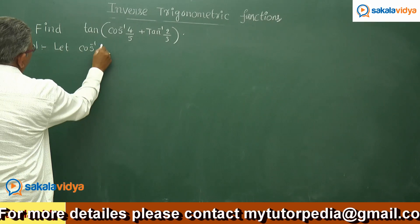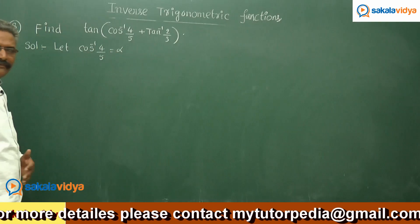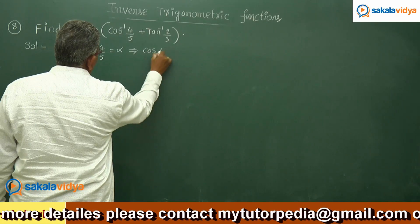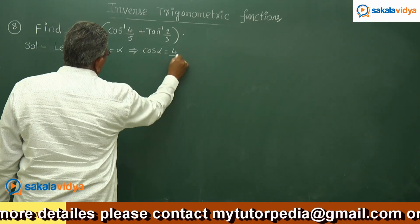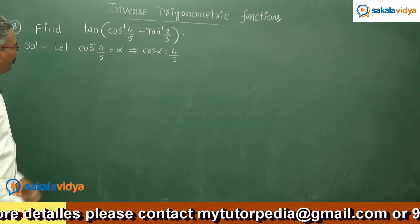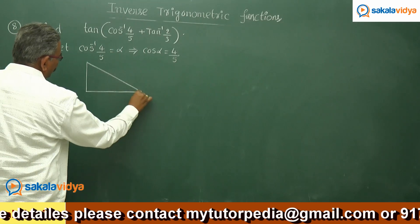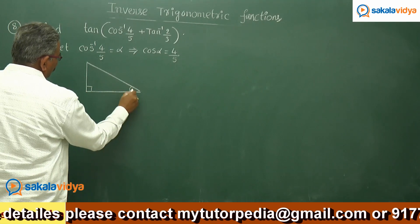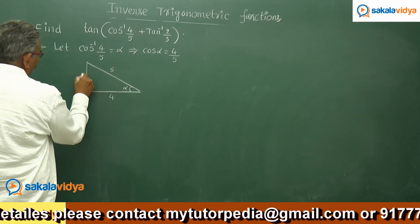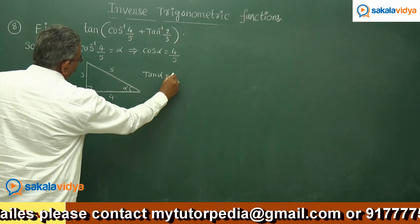Let cos inverse 4 by 5 equals to alpha, which implies cos alpha equals 4 by 5. We need to find out tan alpha first. Let us consider a right angle triangle with angle alpha; this side is 4, hypotenuse is 5, and the remaining side is 3. So tan alpha is equal to 3 by 4.